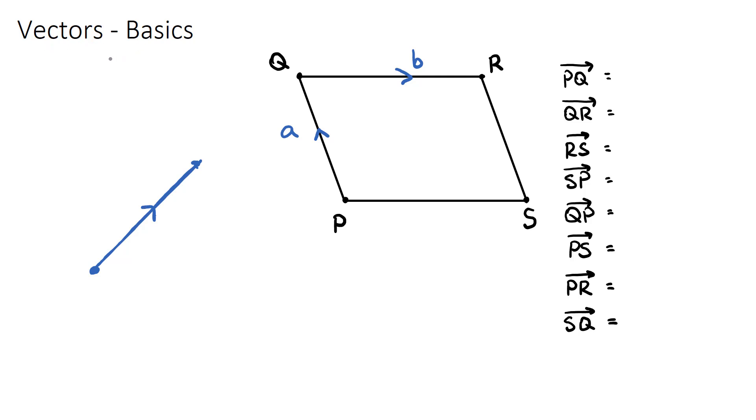The definition of a vector is something that has a magnitude, and another word for magnitude is a size or length, and it needs to have a direction. So things that have a size and length, which is a magnitude, and a direction, they are vectors.